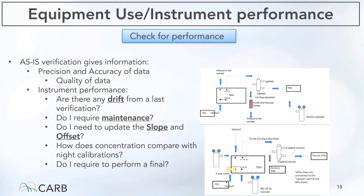As calibrators, we have the opportunity to analyze the performance, precision, and accuracy of the particular analyzers that we are calibrating. We ask ourselves: has the concentration drifted from the last verification? Do I need to perform any maintenance? Do I need to update the slope or the offset of the analyzers? How do the concentration values compare to the night calibration? Or do I need to perform a final check after any maintenance or changes have been done? These are important questions to ask in regards to understanding instrument performance and comparing to previous data.